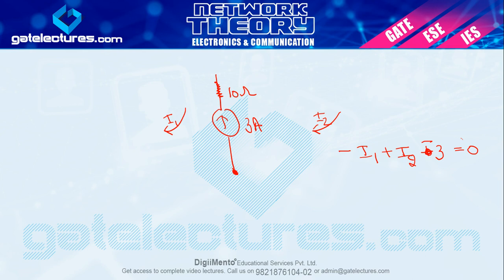यह concept clear होना चाहिए — super mesh का and super node का। अभी मैंने super mesh और super node का एक-एक example लिया है। जब हमारा subject complete हो जाएगा, तो हम और भी ढेर सारे examples करेंगे — super mesh, super node, KVL, KCL and so on। I hope आपको यह concept clear होगा। अगर कोई doubt हो तो comment section में लिखें। Thank you।